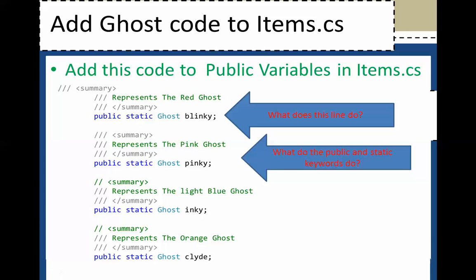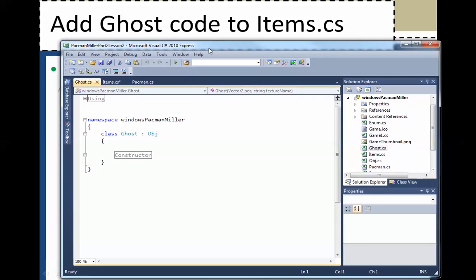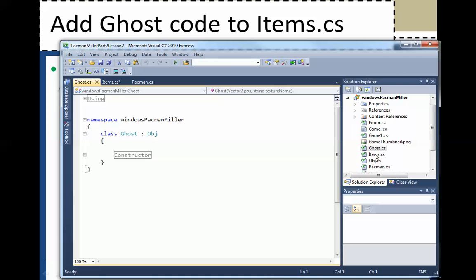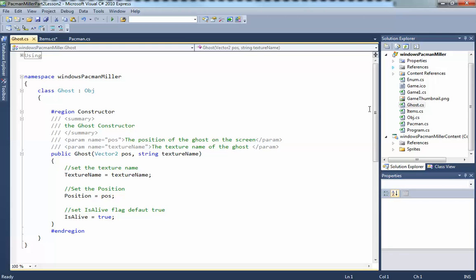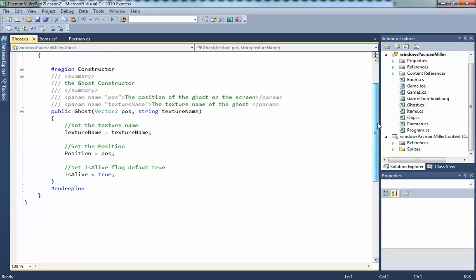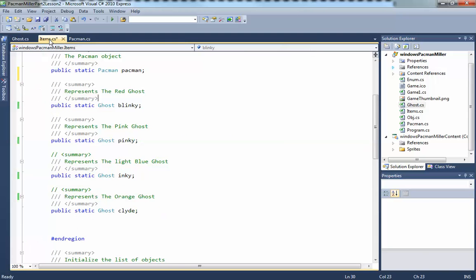Basically you should have something a little bit like this. We just messed around with ghosts. Then you're going to go to items and add the stuff for blinky, pinky, inky, and clyde.